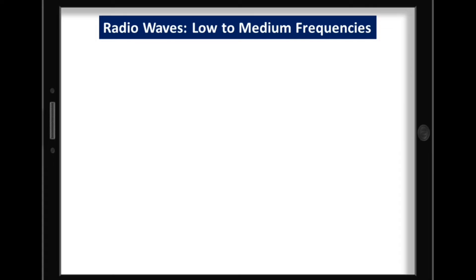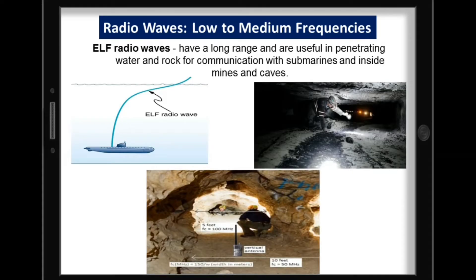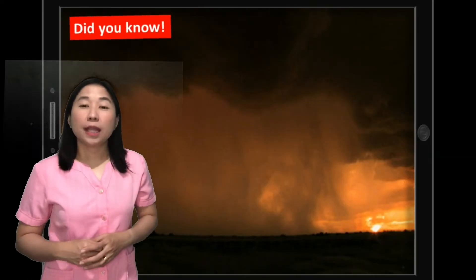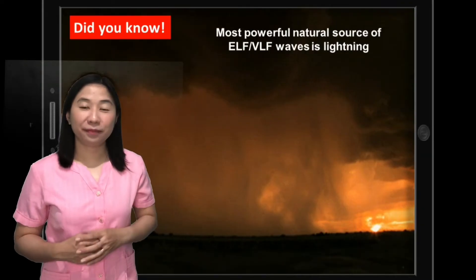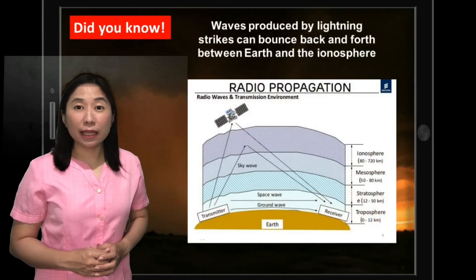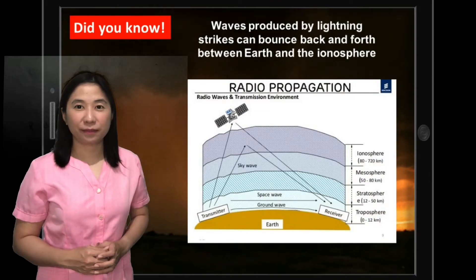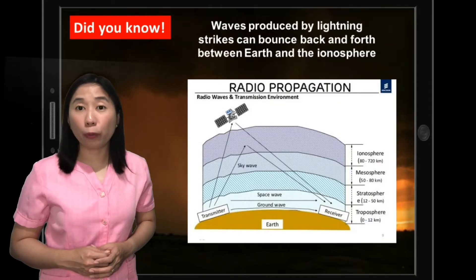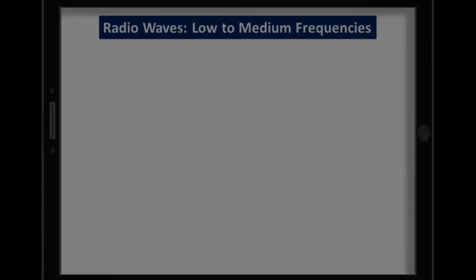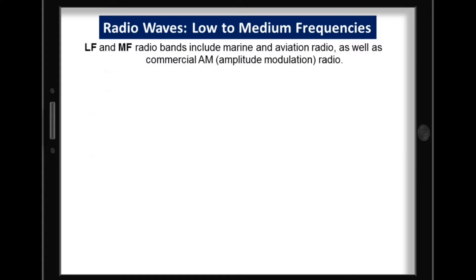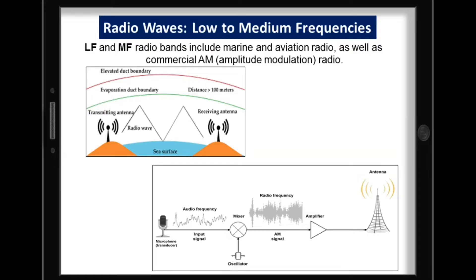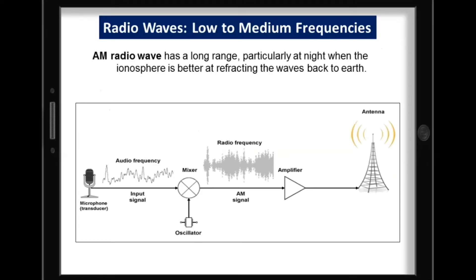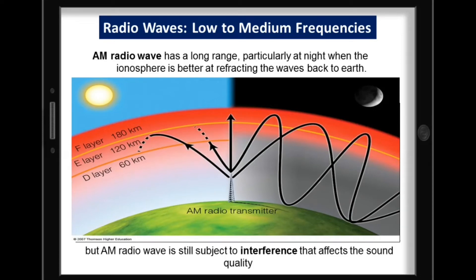Uses of radio waves with low to medium frequencies: The ELF radio waves, the lowest of all radio frequencies, have a long range and are useful for penetrating water and rock for communication with submarines and inside mines and caves. The most powerful natural source of ELF or VLF waves is lightning, whose waves can bounce between Earth and the ionosphere and distort important radio signals. The low frequency and medium frequency bands include marine and aviation radio, as well as commercial AM radio, which has a long range but is subject to interference that affects sound quality.